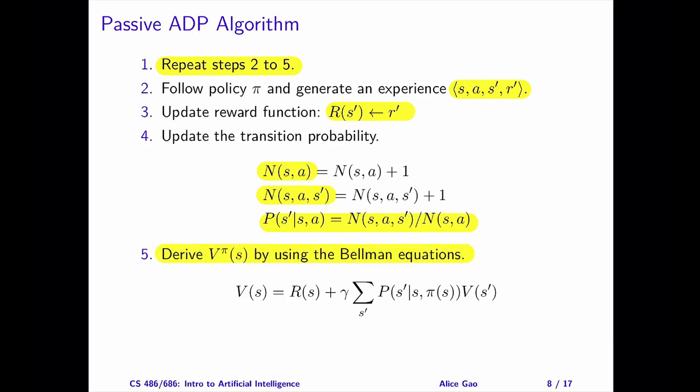Looking at the Bellman equations, the reward function is known, the discount factor is given, and the transition probability is known. The V values or the utility values are the variables. We can solve for the utility values exactly since all the Bellman equations are linear. You can use your favorite linear programming technique to solve them. Alternatively, we can solve for the utility values iteratively using value iteration or policy iteration.